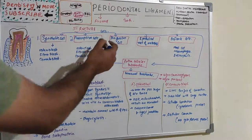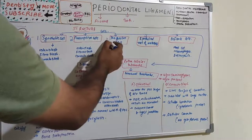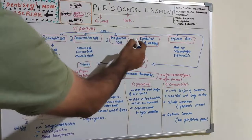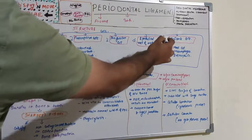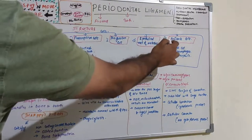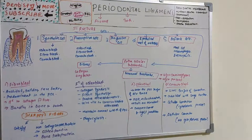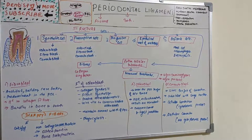The third one is progenitor cells, then epithelial rest of Malassez, and defense cells. The basic defense cells are mast cells, macrophages, and eosinophils.